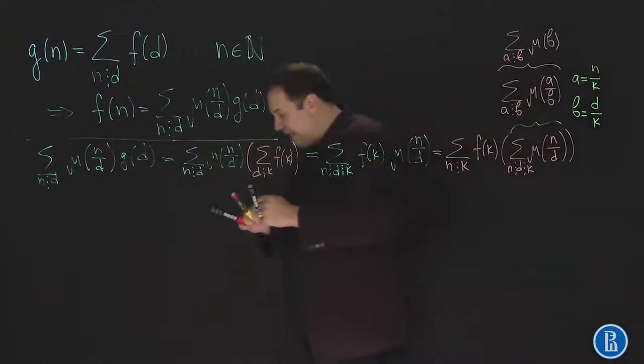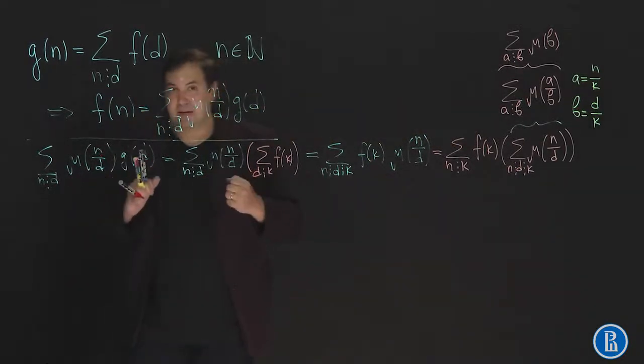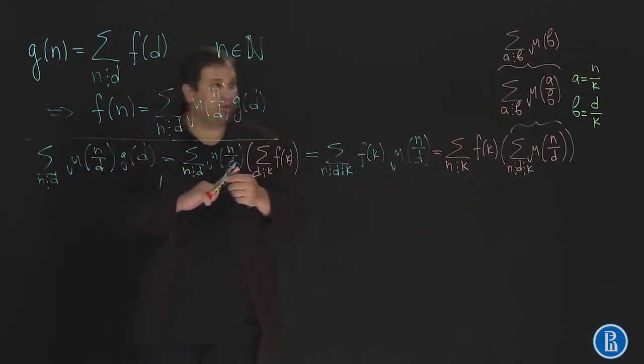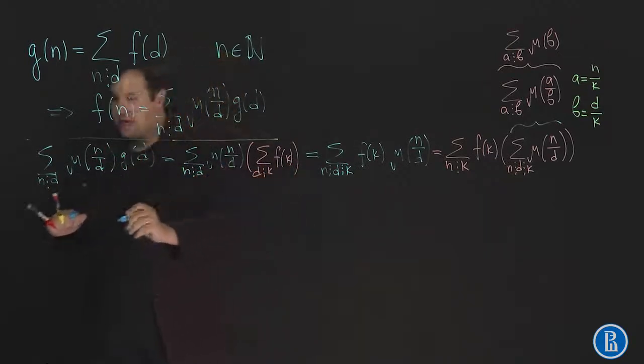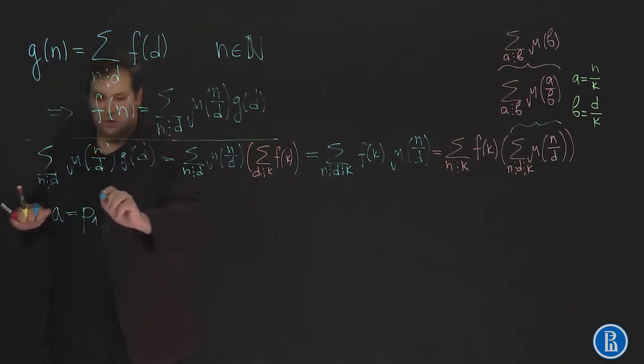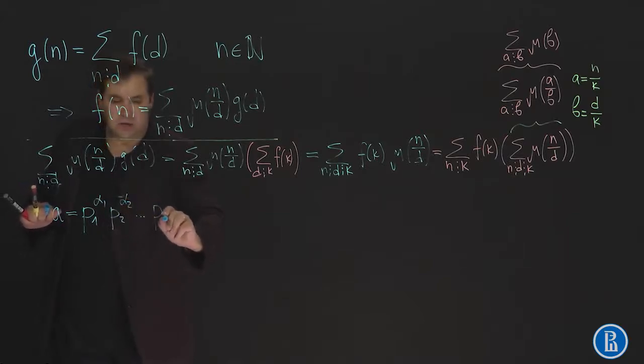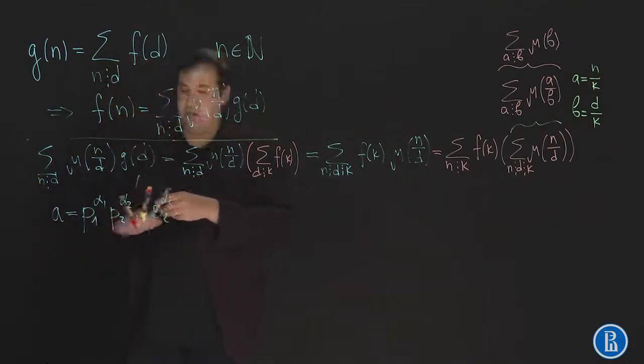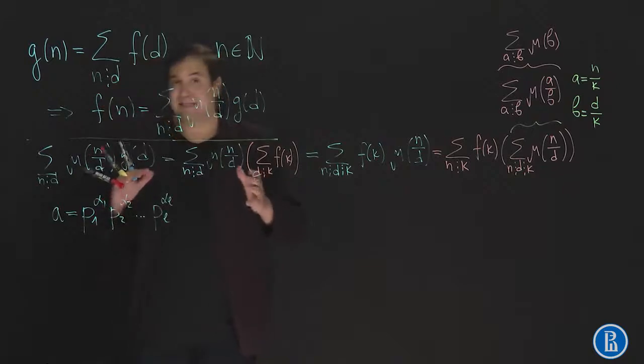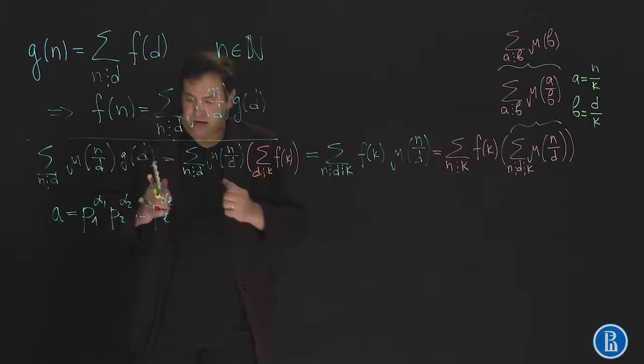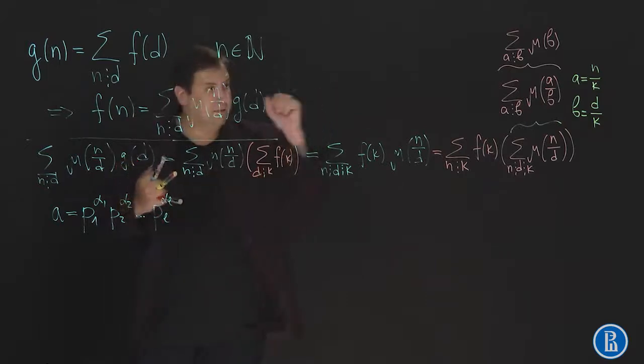In order to deal with this expression, let's represent a as a product of prime numbers. So just take prime factorization of a. Say a is equal to p1 to the power alpha 1, p2 to the power alpha 2, and so on. p1, p2, and so on are pairwise distinct prime numbers. And try to calculate this sum over there.